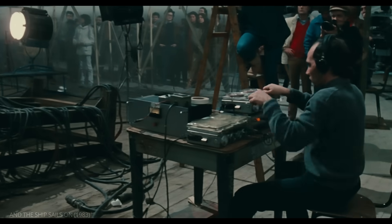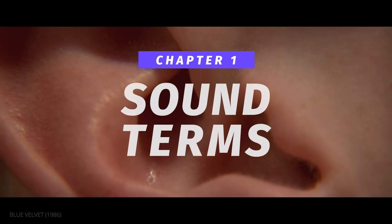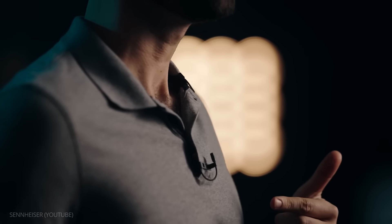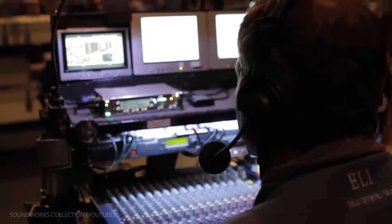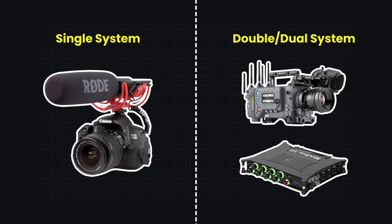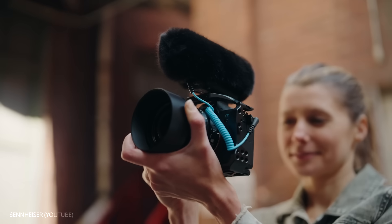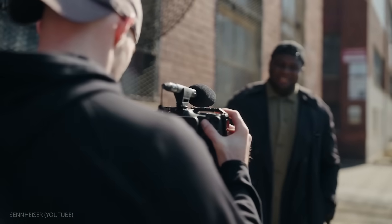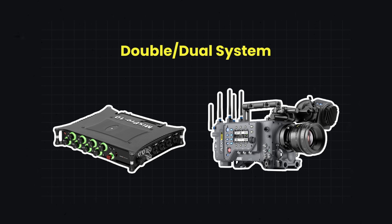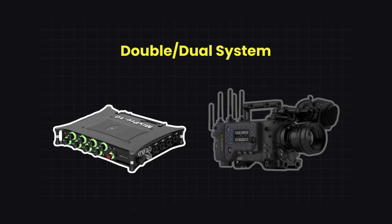The physics of sound only scratches the surface of the knowledge a sound mixer needs to have. Let's look at some additional sound terms. Many of the terms you may hear in the sound department on set refer to various pieces of equipment. First, there is the single system versus the double or dual system for recording sound. A single system is when audio is captured directly onto a camera. This makes for a compact setup that is quick and pre-synced for an editor. But most professional sets will use the dual system, where the audio is captured independently from the camera.